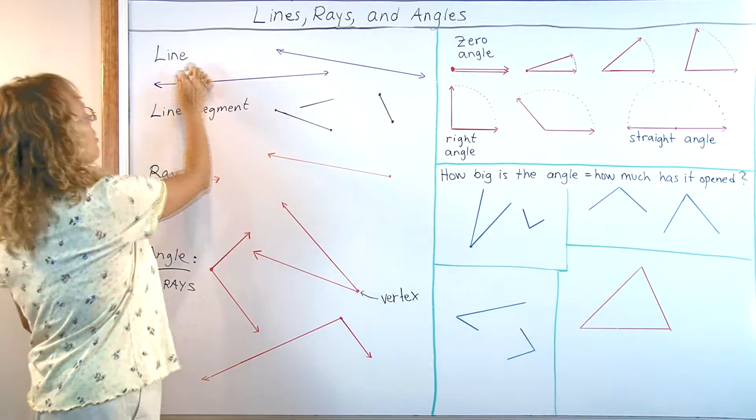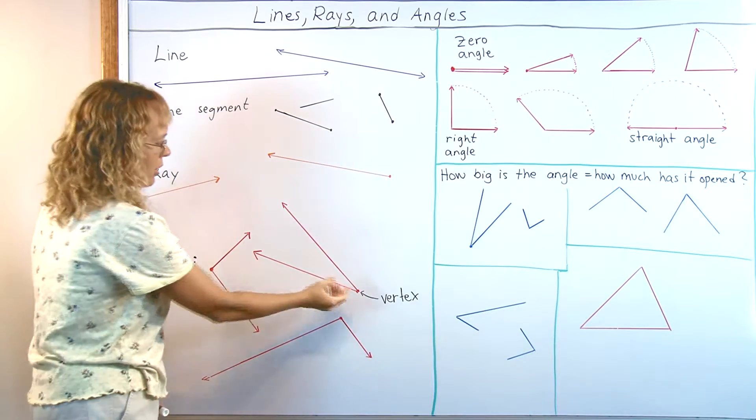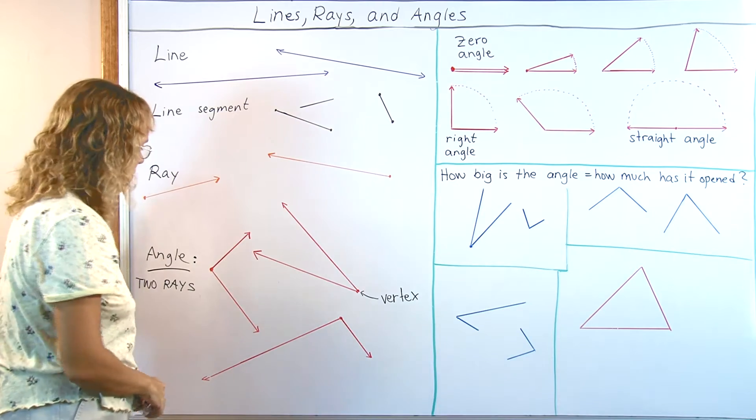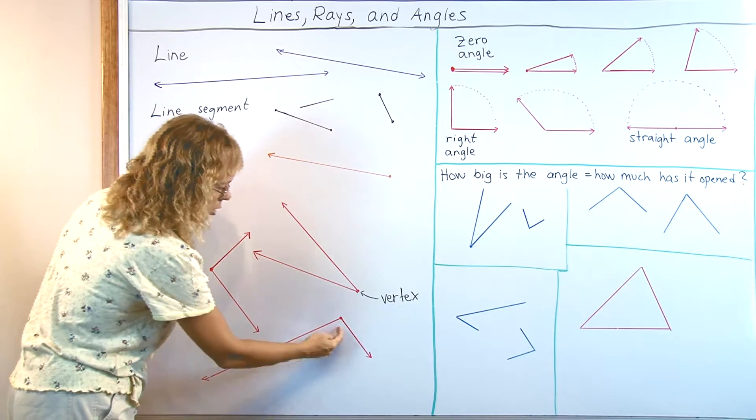And both rays will go on forever like that, but of course I cannot draw them like that. We have to just draw them certain ways and then put these little arrows there. So here is another example of an angle, two rays starting at this point.